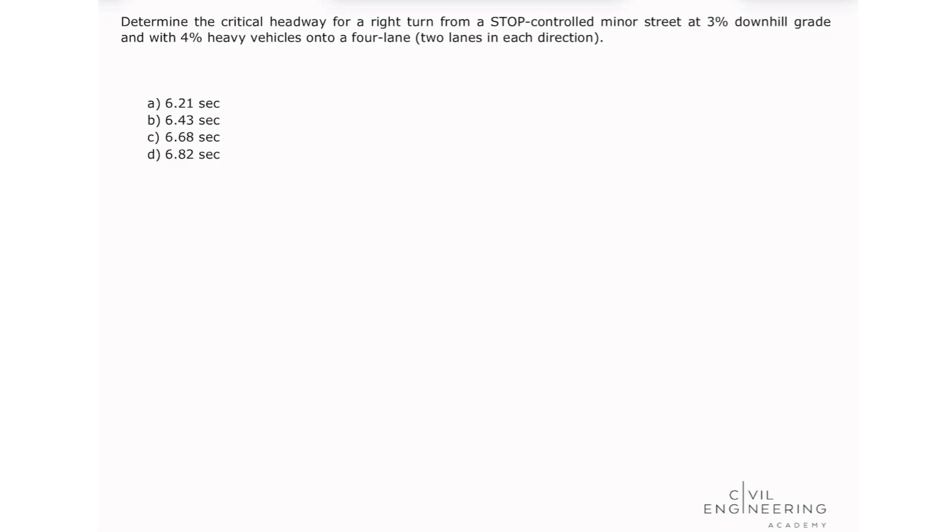Determine the critical headway for a right turn from a stop-controlled minor street at 3% downhill grade and with 4% heavy vehicles onto a four lane, two lanes in each direction.